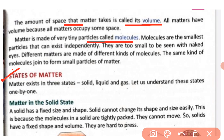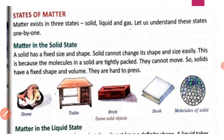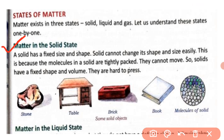Now, states of matter. Matter exists in three states: solid, liquid and gas. Let us understand these states one by one. First is matter in the solid state. A solid has a fixed size and shape. Solids cannot change their shape and size easily, because the molecules in a solid are tightly packed.